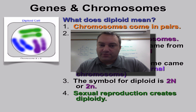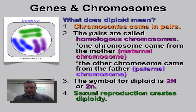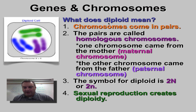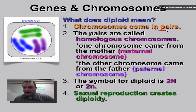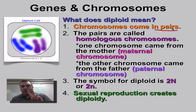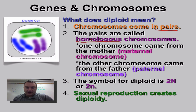Let's start off with diploid. Think of the word 'ploid' as referring to chromosomes, and then you see the prefix 'di,' which obviously means two. So when we are diploid, this means that chromosomes are going to come in pairs — you're going to have two of every chromosome.